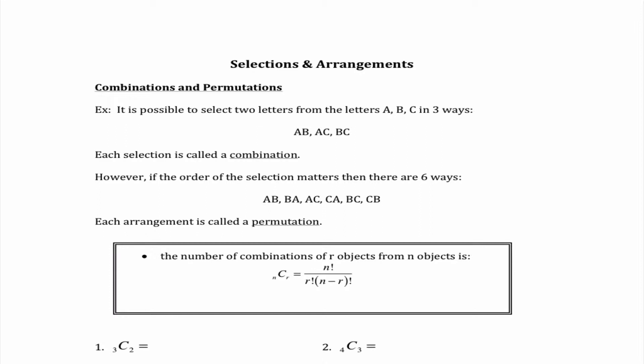However if the order of the selection matters then we have six ways and each arrangement is called a permutation. So the big thing I want you guys to get out of that is that in a combination the order is not important.